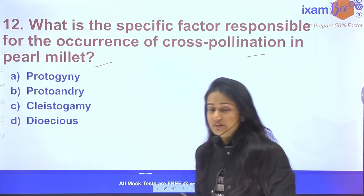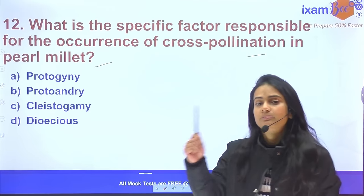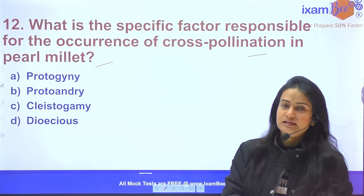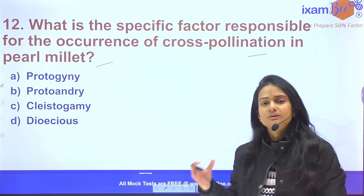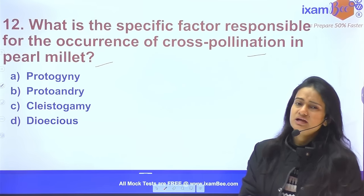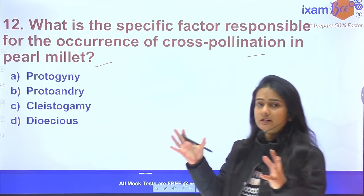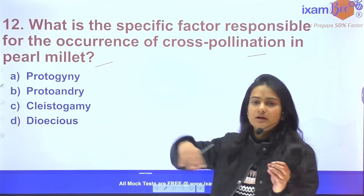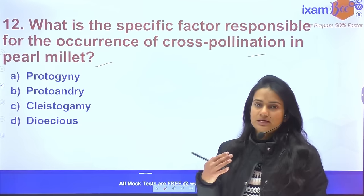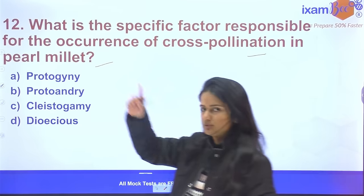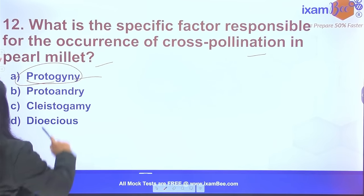In maize, pollination occurs — maize exhibits protandry, and pearl millet exhibits protogyny. In protogyny, the female part matures first and then the male part matures. Because both don't mature simultaneously, self-pollination cannot occur, leading to cross-pollination. So protogyny would be the answer for pearl millet.